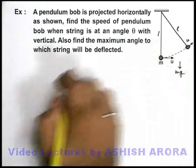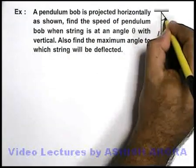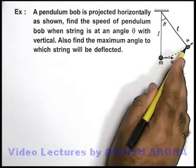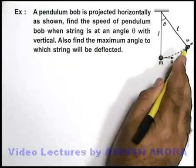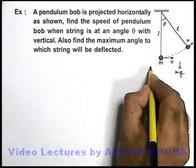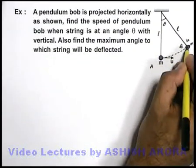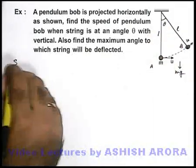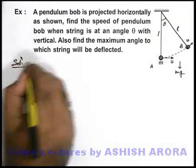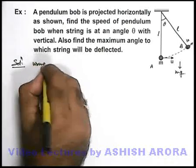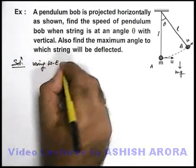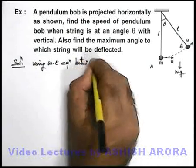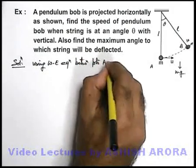So in this situation, at an angle theta when the string is deflected, if we wish to calculate the speed of bob, we can directly use work energy theorem from the initial position A to the position B where string makes an angle theta with the vertical. So we start our solution using work energy equation between points A and B.